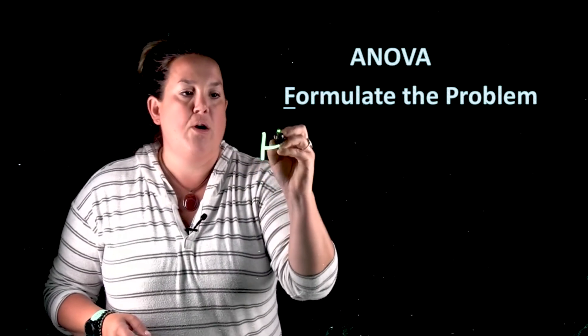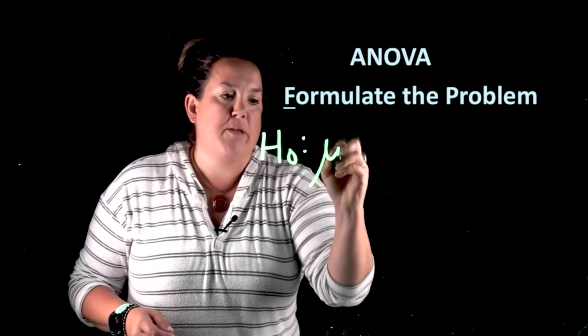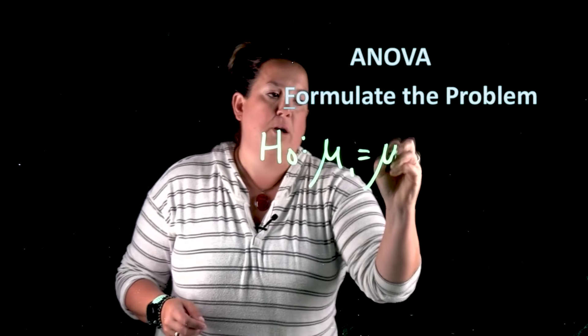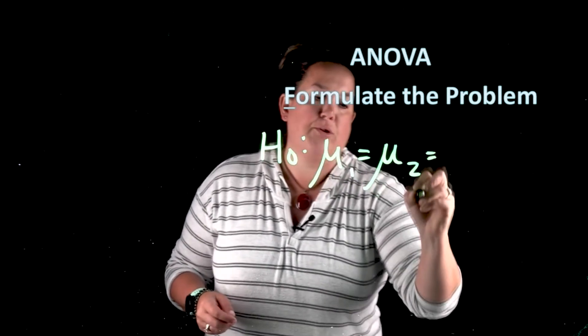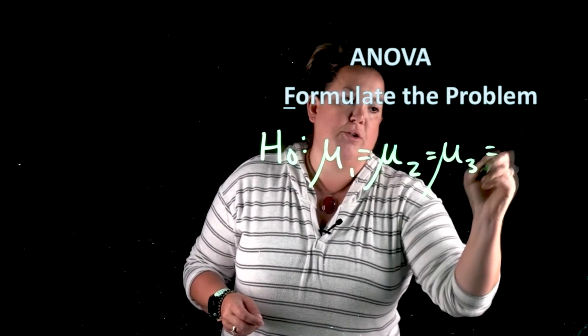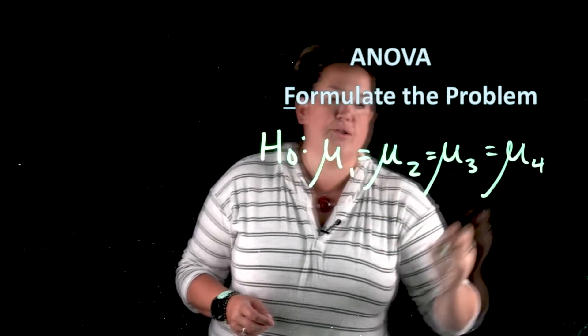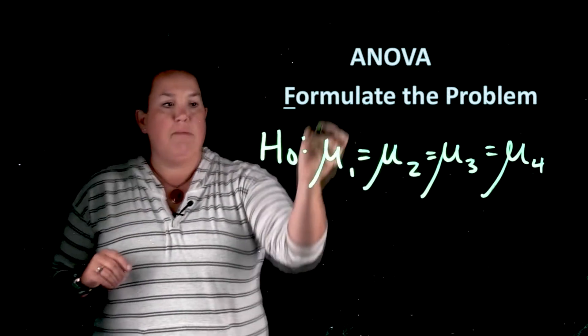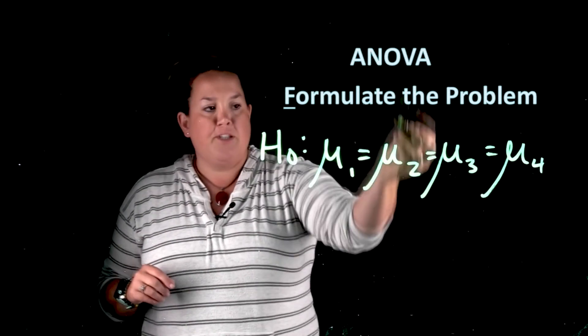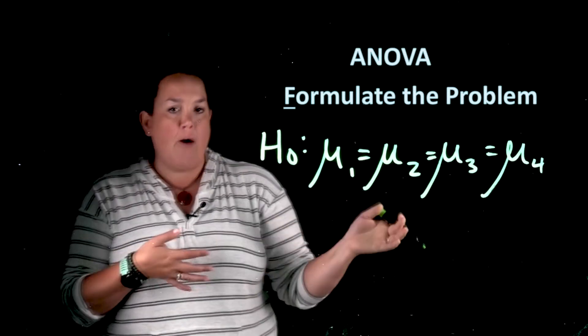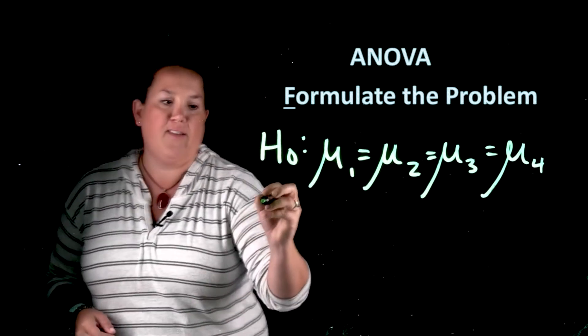So here our null might be that μ₁ equals μ₂ equals μ₃ which equals μ₄. So remember we just talked about maybe hours of study for freshmen, sophomore, junior, senior. So you have how many mu's you defined? That goes into your null hypothesis.